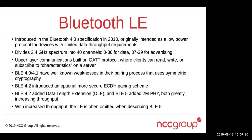In Bluetooth 5, they added a number of new PHY modes, including a 2 megabit PHY. This 2 megabit PHY, together with data length extension, has greatly increased the throughput of Bluetooth LE. Another reason people often refer to Bluetooth 5 without saying 'low energy' is that it's no longer restricted to low power, low throughput applications — its throughput is now pretty comparable to Bluetooth Classic. The main reason Classic profiles are still used for audio is the huge number of existing devices that make use of them.